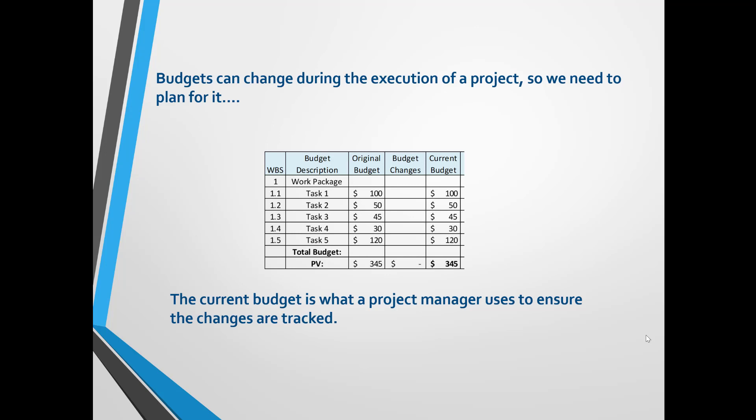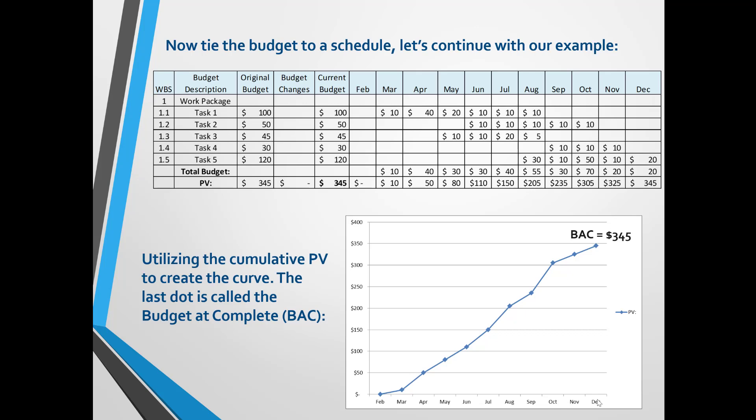You can see that the first five columns come from the budget planning. To tie the schedule to the budget, place the timeline in the title bar. In this example I am using months, but you can use weeks or days as well. When a task is worked on, you know you spent money performing the work — this is resource cost, which can be materials, people, or equipment. For instance, the first task in March will be a person's time to acquire raw materials, so I am estimating $10 of the current budget will be spent.